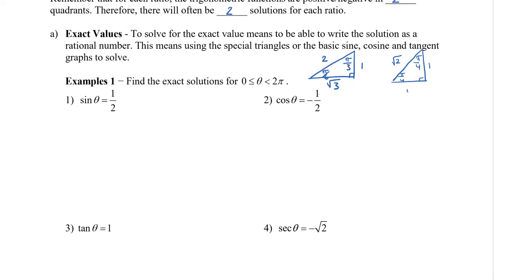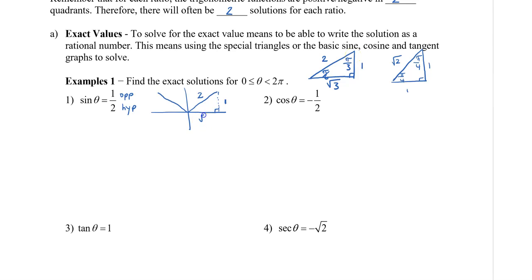Let's take a look at our first example: sin θ = 1/2. We're trying to find an angle that, when we take the sine, gives the ratio 1/2. The ratio is positive, so I draw two angles — one in the first quadrant and one in the second quadrant, because that is where sine is positive. Knowing that 1 is the opposite and 2 is the hypotenuse, this matches the π/6, π/3 special triangle. So the reference angle is π/6.